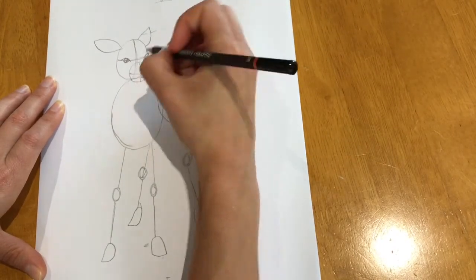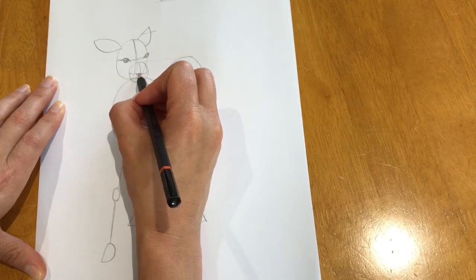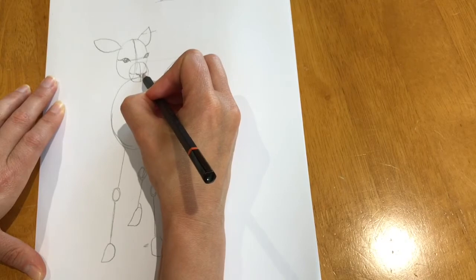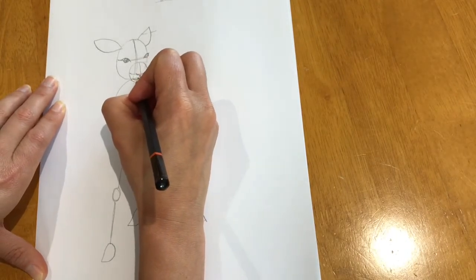And then the nose is going to be where this line crosses. One nostril there and one nostril there. And then the little mouth.